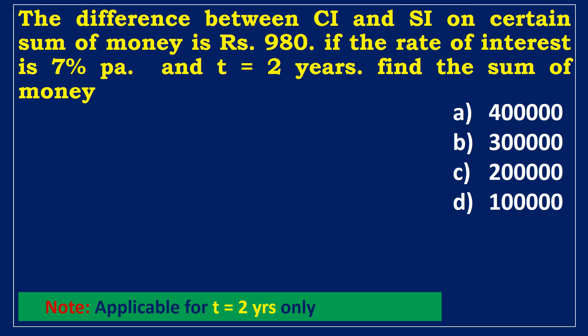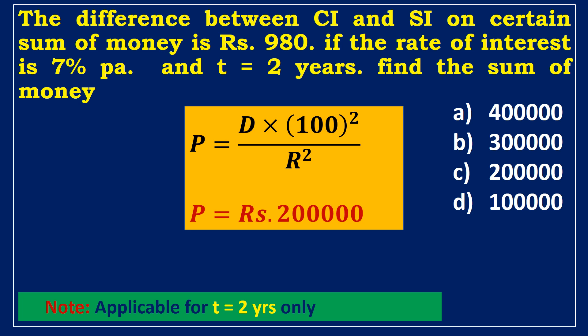Fourth example: The difference between compound interest and simple interest on a certain sum is 980 rupees. If the rate is 7% per annum and time = 2 years, find the sum. Using the formula: Principal = (CI − SI) × 100² / r². Substituting the difference of 980 rupees and rate of 7%, the required principal is 200,000 rupees.